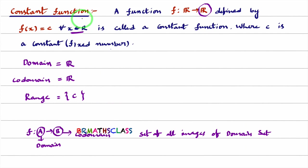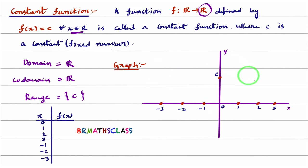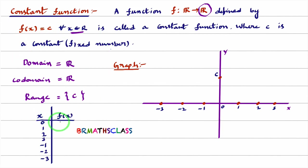Now we will learn how to draw the graph of a constant function. Consider the coordinate axes — x-axis and y-axis. We know that f(0) is a fixed number c, so f(0) = c. Here c is some fixed number. I am marking this c value on the y-axis — you can take c anywhere on the y-axis. The point here is (0, c).